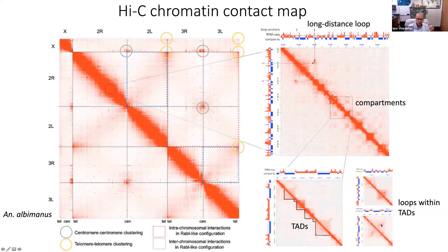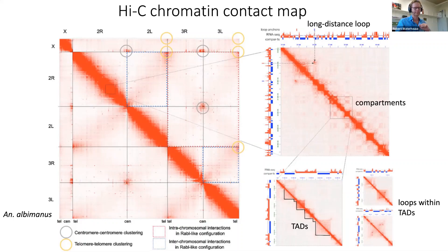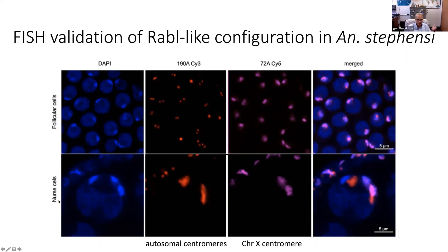To validate whether this Rabl orientation exists, we used FISH where we labeled synthetic probes for autosomes and the X chromosome to see if they co-localize in the nuclear periphery — and they indeed do co-localize. More so in follicular cells, there is co-localization of autosomal and X chromosome probes and satellites with heterochromatin, and to a lesser extent in nerve cells where polytene chromosomes exist.